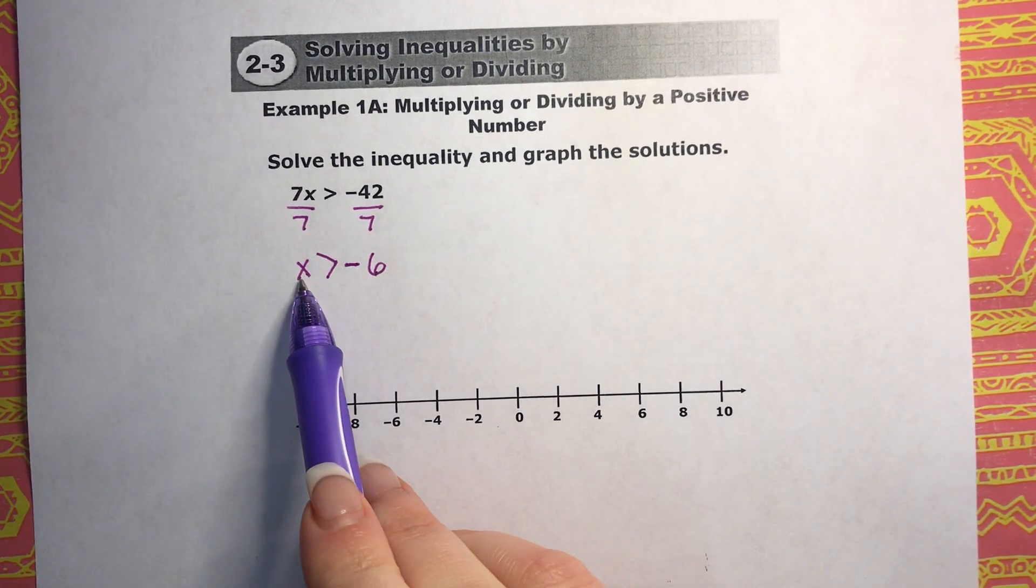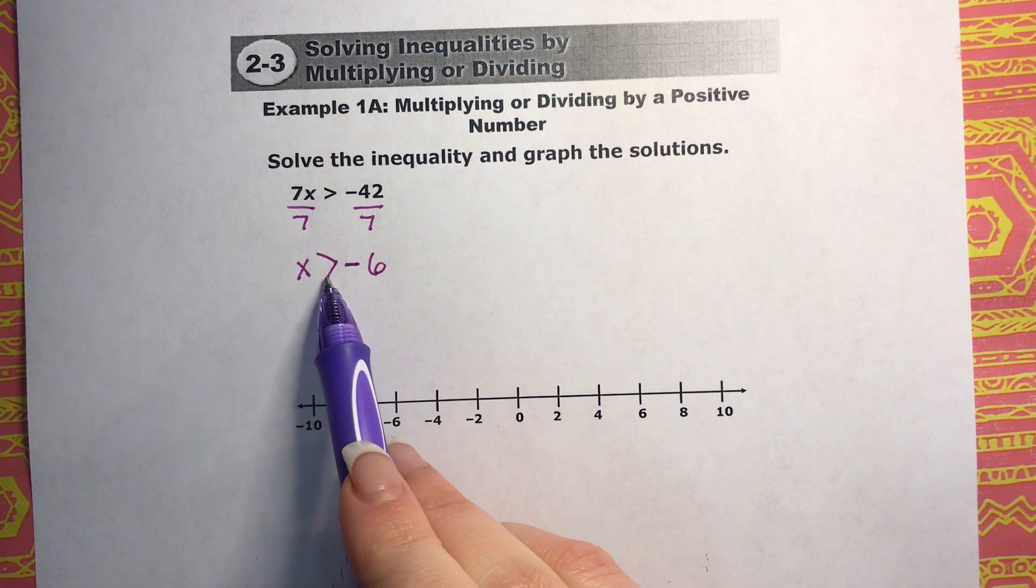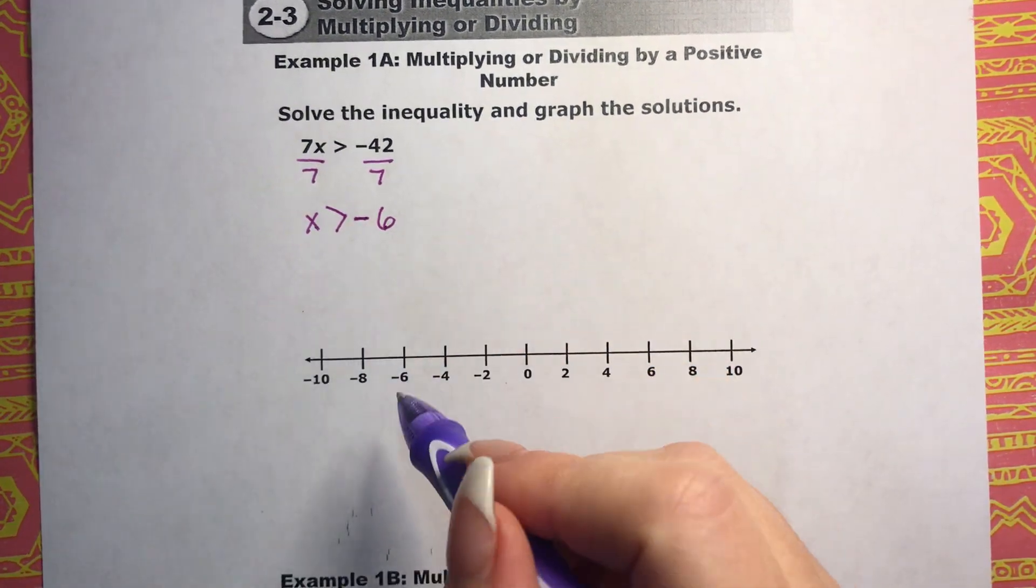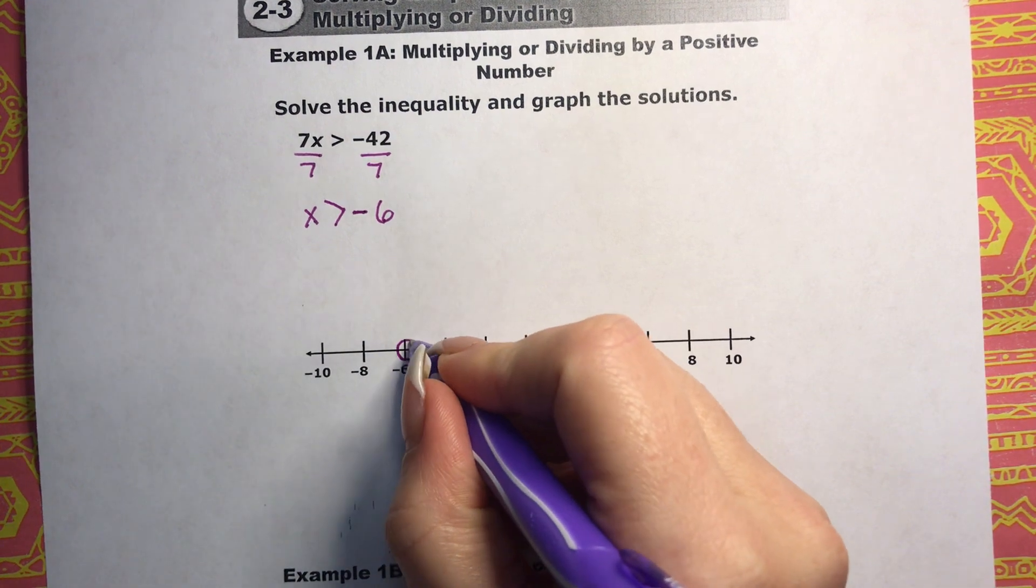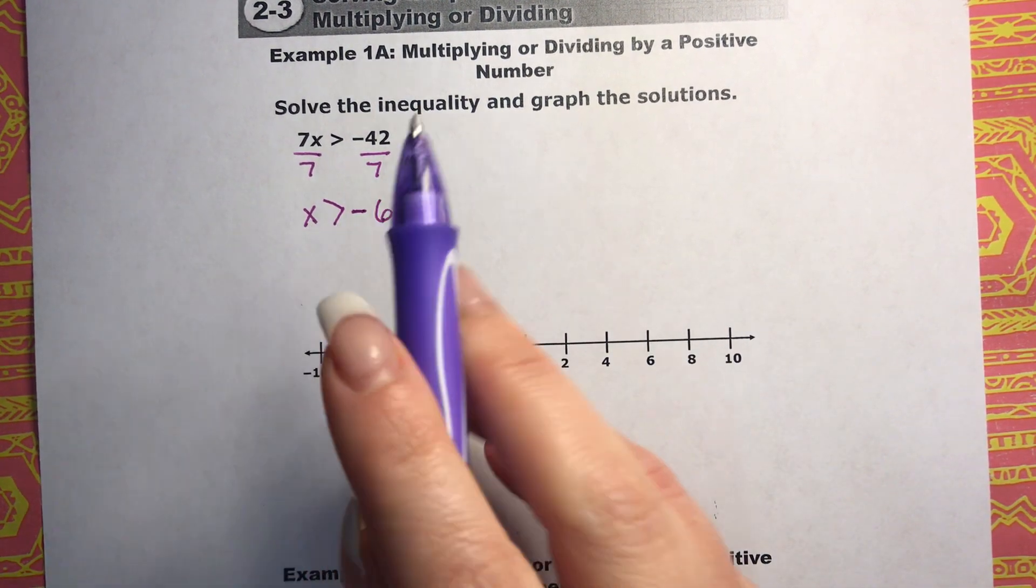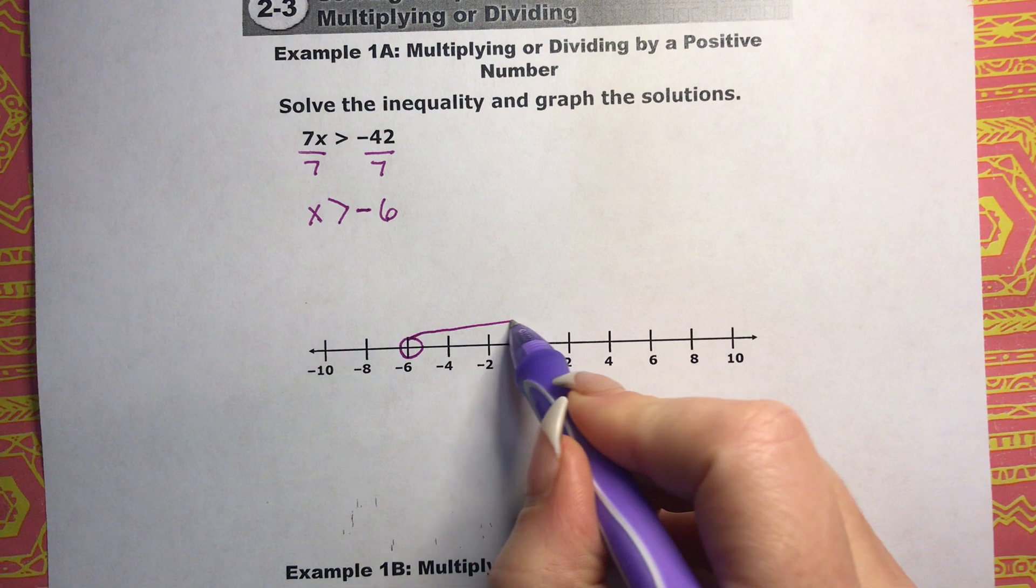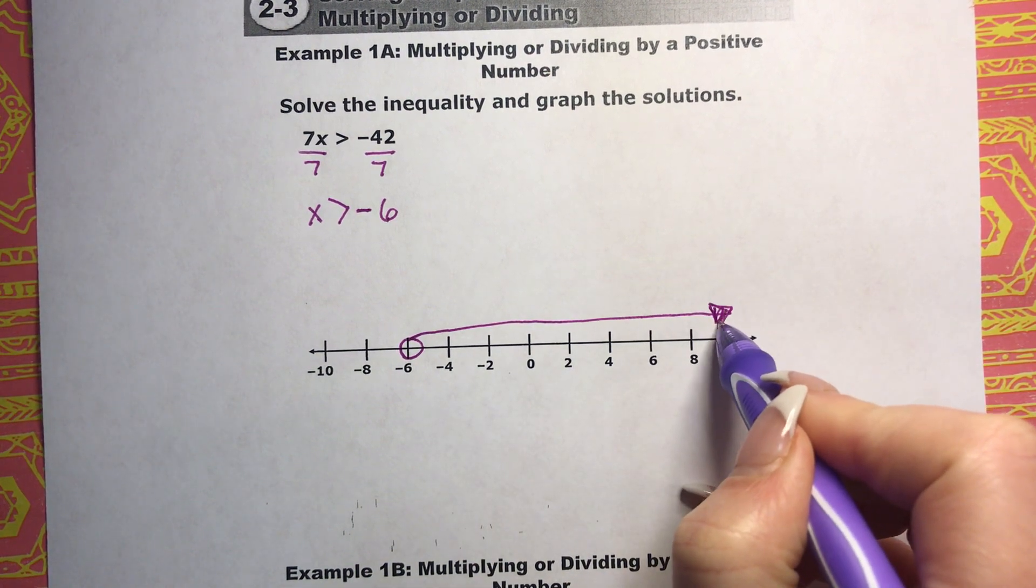Remember, we have x is greater than negative 6, so whenever we have that greater than sign, that means it's going to be an open circle. And x is everything bigger than negative 6, and everything bigger than negative 6 is this way. So that is how you would graph that one.